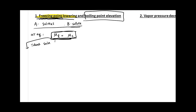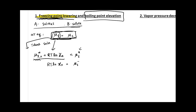Then we can write mu liquid as mu liquid star. This mu liquid is for your solvent, so we write mu liquid solvent plus RT times the natural log of the mole fraction of your solvent. Setting this equal to the chemical potential at the solid phase gives us RT ln(xA) equals mu_S* minus mu_liquid*, which represents delta G, or the change in chemical potential for the freezing step — since the final state is solid and the initial state is liquid. This represents delta mu of freezing.